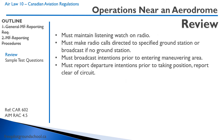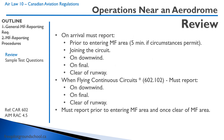Regarding the radio: you have to maintain a listening watch and make radio calls to the specified ground station, or make a general broadcast if there is no ground station. Broadcast your intentions prior to entering the maneuvering area and report departure intentions prior to taking position. On arrival, call prior to entering the MF area, joining the circuit, downwind, final, and clear of runway. For continuous circuits, call on downwind, final, and clear of runway. When transiting, report prior to entering and once clear of the MF area.